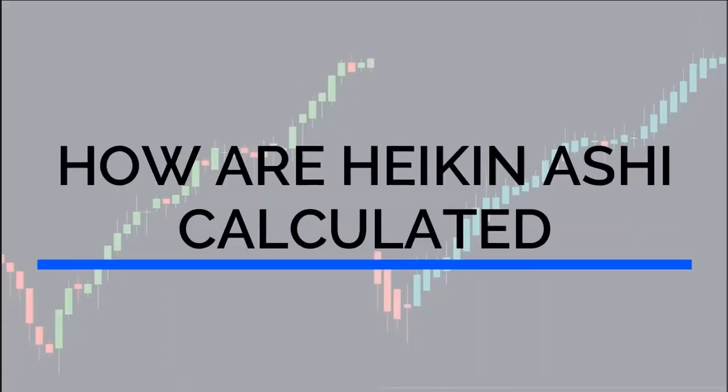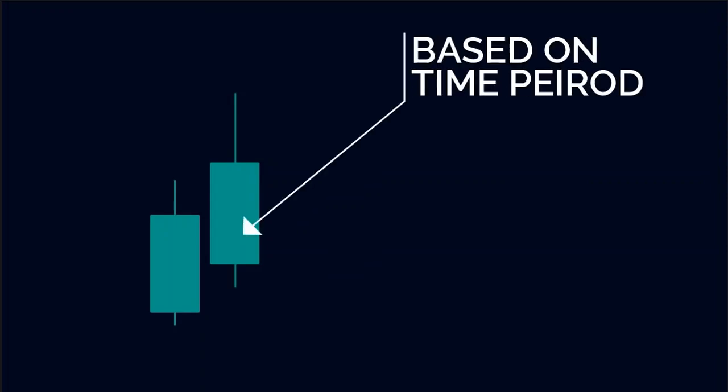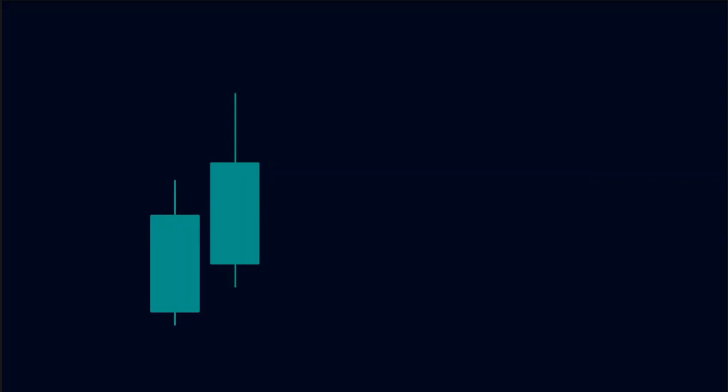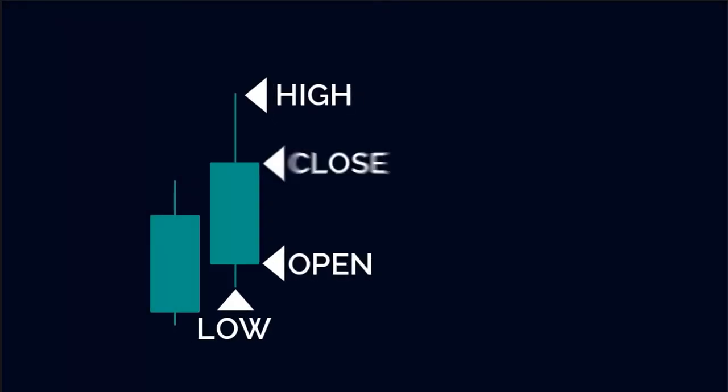Let us now look at how Heiken Ashi candles are calculated. Just like the Japanese candlesticks, Heiken Ashi candles are also based on time period. This means that each candle represents the price action that occurred over a particular period of time. Similar to candlestick charts, Heiken Ashi candles also consist of four data points: open, high, low, and close.